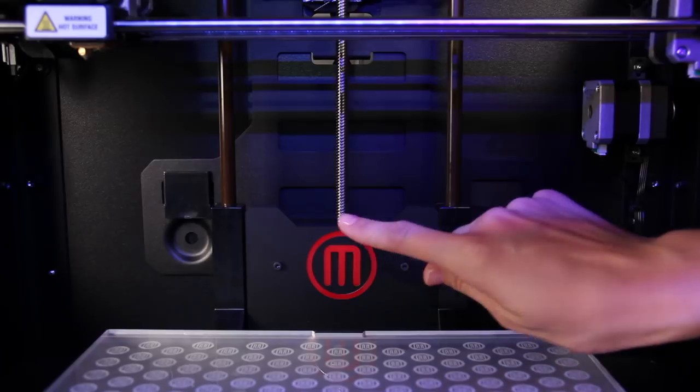The only rod that isn't self-lubricating is this threaded one at the back of your machine. If your MakerBot Replicator 2 ever starts squeaking at you, it's probably time to lubricate that rod.